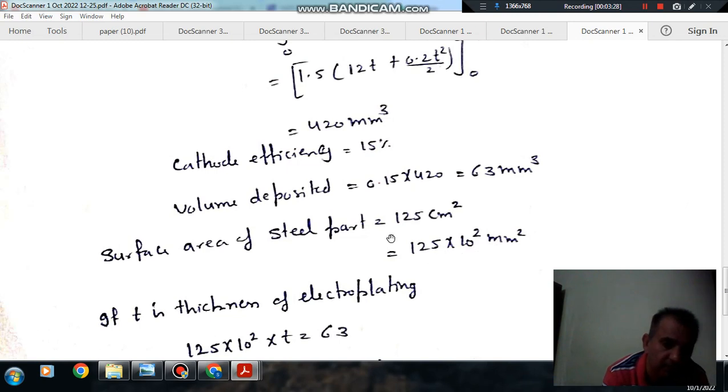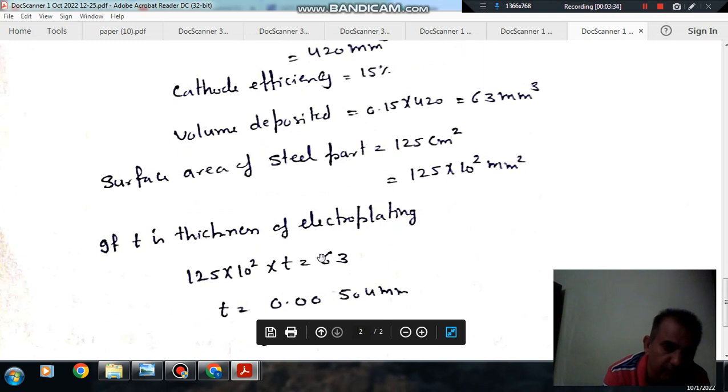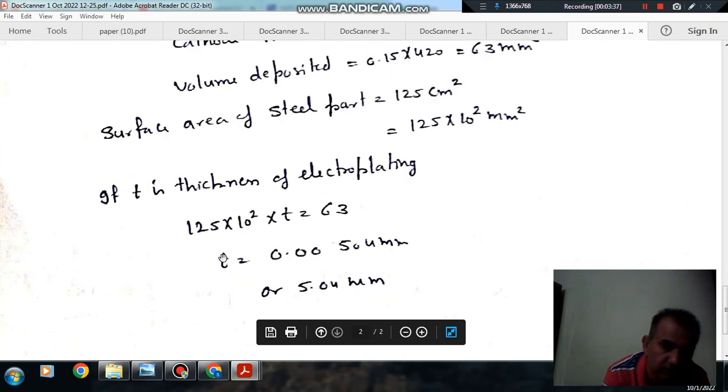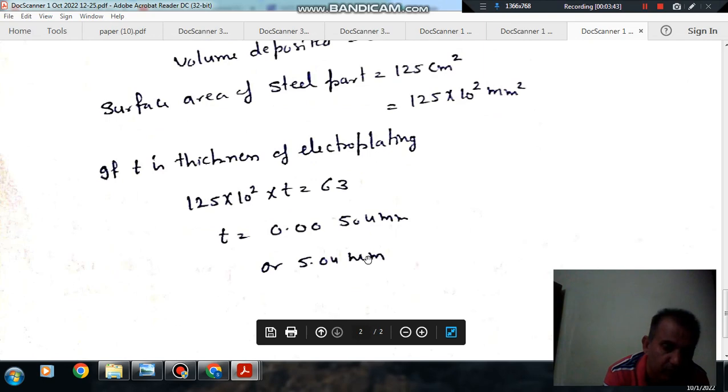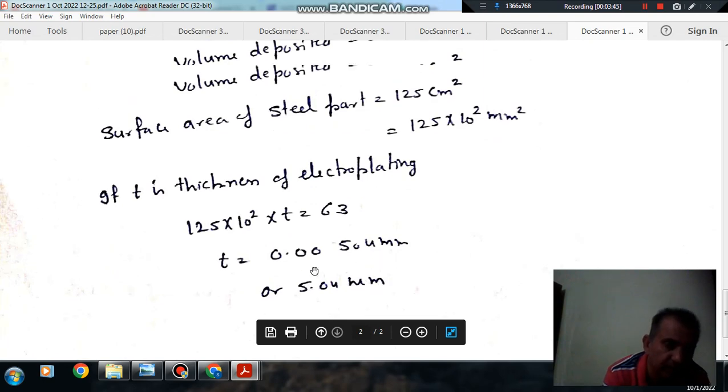So we know that surface area times thickness equals volume. Now putting surface area times t equals 63 mm cubed, t comes out as 0.00504 mm, or 5.04 micrometer is the right answer.